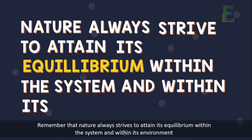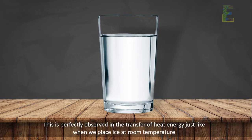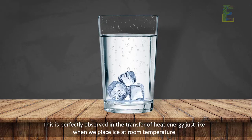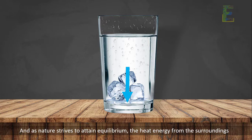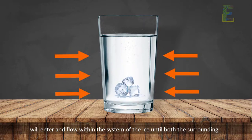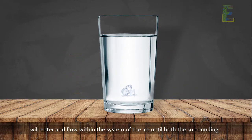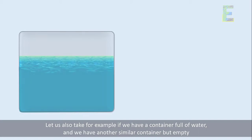Remember that nature always strives to attain its equilibrium within the system and within its environment. This is perfectly observed in the transfer of heat energy — just like when we place ice in a room-temperature environment. The ice has a very low temperature compared to its surroundings, and as nature strives to attain equilibrium, the heat energy from the surrounding will enter and flow into the system of the ice until both attain the same temperature.